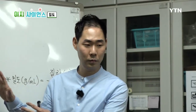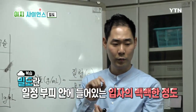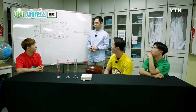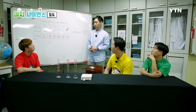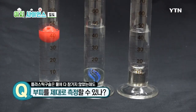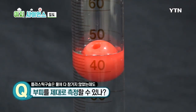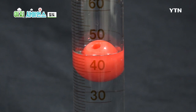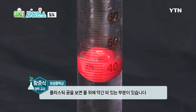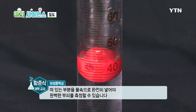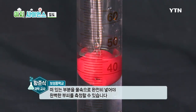무게추가 질량이 더 나갔는데 유리 구슬에 비해서 부피는 유리 구슬이 더 올라갔네요. 밀도라고 하는 거는 어느 부피 안에 입자가 몇 개나 들어있는지입니다. 그런데 아까부터 궁금한 게 있어요. 유리 구슬이랑 무게추와 달리 플라스틱 구슬은 물에 다 잠기지 않고 일부분 떠 있는데도 부피를 제대로 측정할 수 있는 건가요?